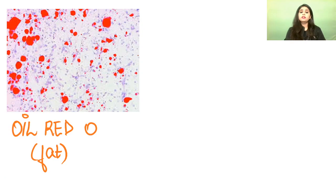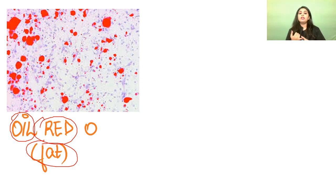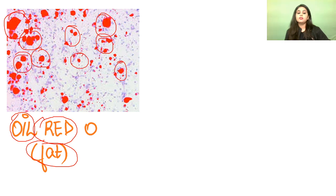Oil Red O — the name itself tells you everything. 'Oil' means something fatty, so it is used for staining fat. 'Red' tells you the colour it gives to fat. You can see in the image all the globules are stained reddish.